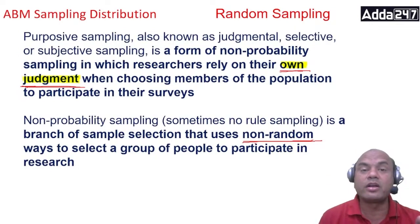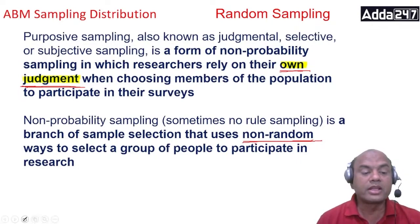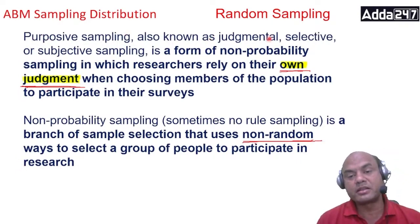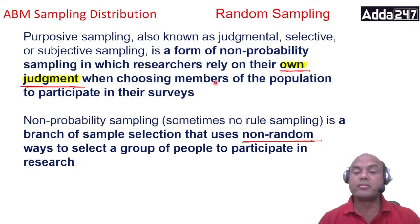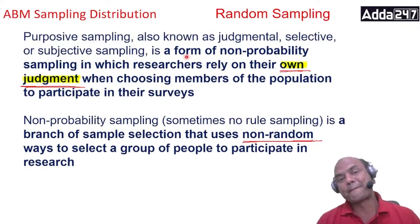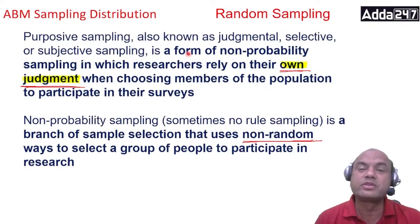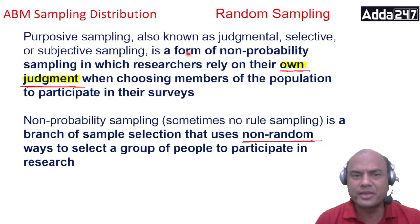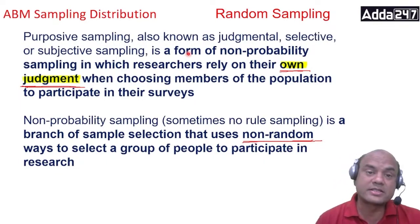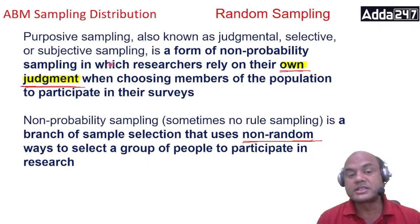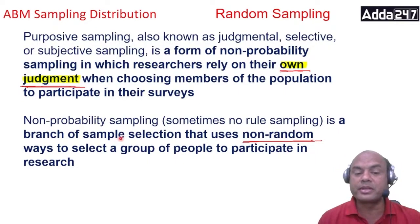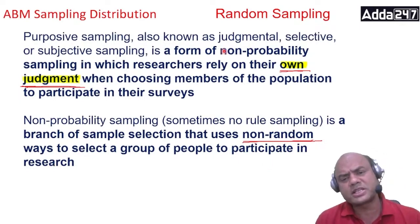Now the second part — non-probability sampling. Purposive sampling, also known as judgmental, selective, or subjective sampling, is a form of non-probability sampling in which researchers rely on their own judgment when choosing members of the population. Example: in singing or dancing competitions on TV, judges have their own judgment — they are learned persons. Non-probability sampling uses non-random ways to select groups of people, based completely on judgment.